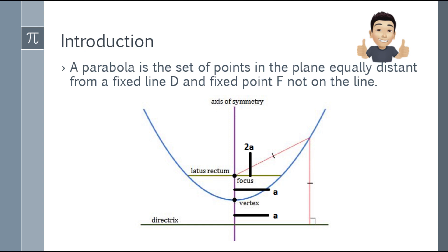A parabola is a set of points in the plane equally distant from a fixed line B and fixed point F not on the line. So you'll notice it has a vertex, a focus, and a curve shape. The curve shape can open upward, downward, to the left, or to the right, which we will see later.